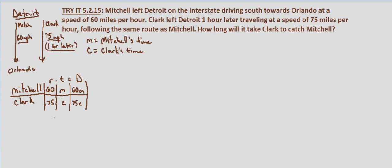Now let's set up our system of equations. First, we know their distances will be the same when Clark catches Mitchell, so our first equation is 60M equals 75C. We also know Clark left one hour later, so when he catches up, he will have traveled one hour less in time.